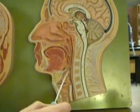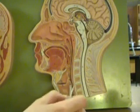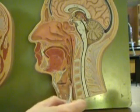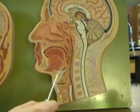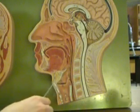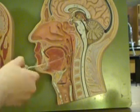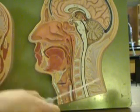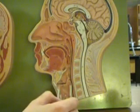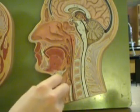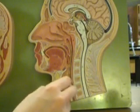We have the trachea, where air flows in and out. Just behind it is the esophagus, where food enters. This cartilage will flap down to close the trachea when you eat food, so food doesn't enter the windpipe — and this cartilage is called the epiglottis. This indentation here is the vocal fold.